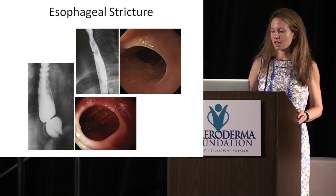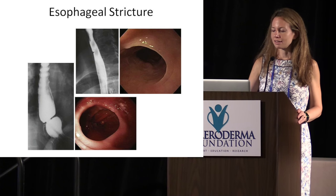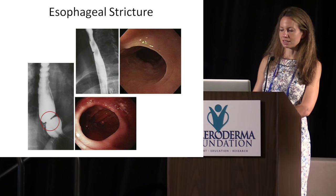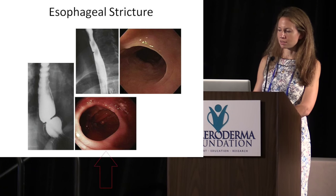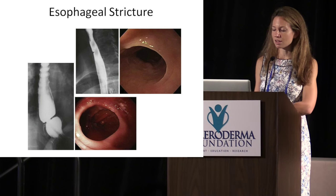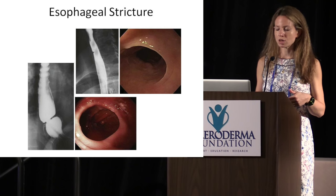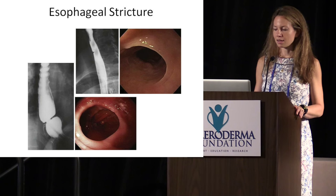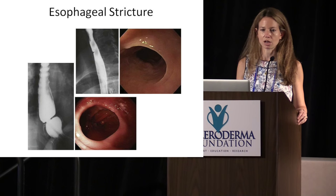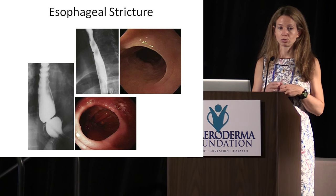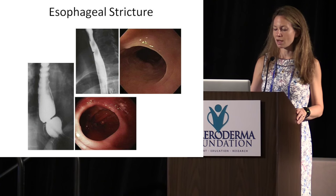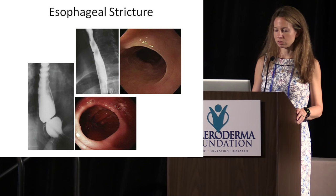Another thing that can happen in the esophagus is an esophageal stricture — this is when a band of tissue comes and closes off. You can see that really nicely in the barium swallow, and on endoscopy. These happen as a result of chronic reflux and can make swallowing much harder. They are actually highly amenable to treatment — the gastroenterologist, when they're there, can use a balloon and blow it up right around the stricture, it tears the tissue apart but it heals well, and that really works to relieve that problem.